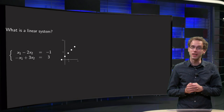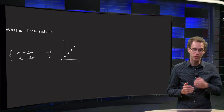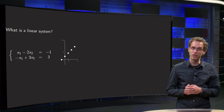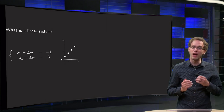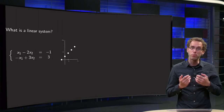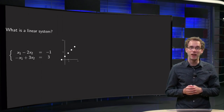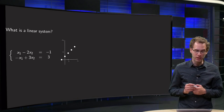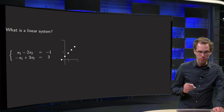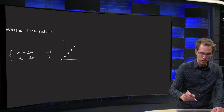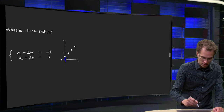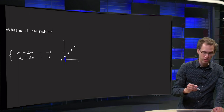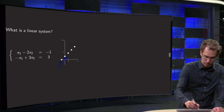Let us take a look again at our linear system. First equation: x1 minus 2x2 equals minus 1, and second equation: minus x1 plus 3x2 equals 3. Now we're going to plot all the points which satisfy the first equation in the x1, x2 plane. If we set x1 equals 0, then we get minus 2x2 equals minus 1, so x2 equals 1 half — that's this point. And if we set x1 equals minus 1, then x2 has to be 0 — that's this point over here.